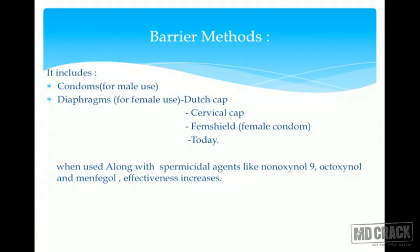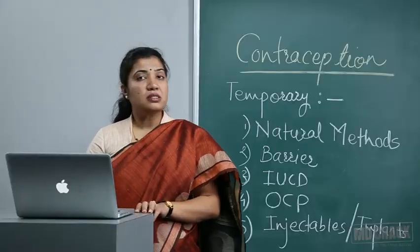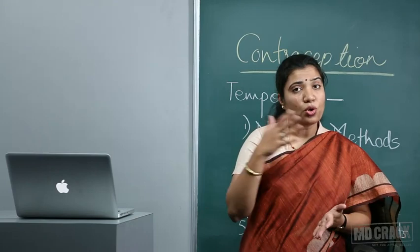Barrier methods are very commonly used. The male condom and female barrier methods — including diaphragm, Dutch cap, cervical cap, Dumas cap, Femidom, and female condom — are available. Spermicidal agents such as nonoxynol-9, octoxynol, or menfegol can be added to barrier methods to increase effectiveness. Nirodh is provided free of cost in India and is made of latex.